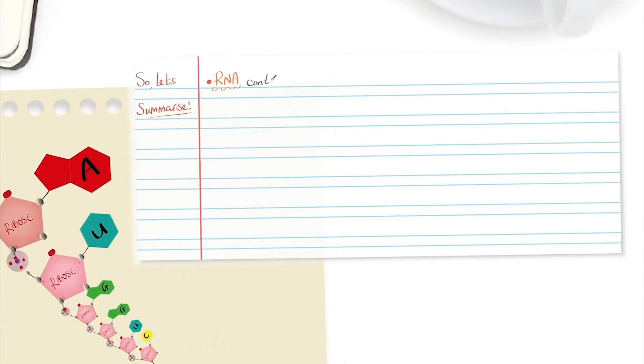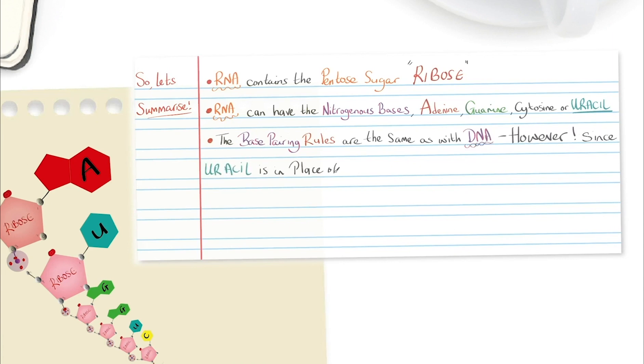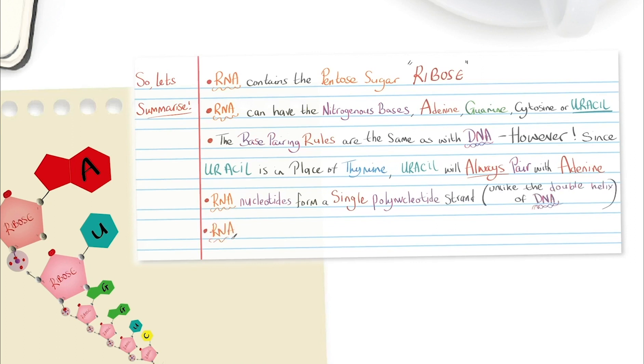Let's summarise. RNA contains the pentose sugar ribose. RNA can have the nitrogenous bases adenine, guanine, cytosine or uracil. The base pairing rules for RNA are the same as with DNA. However, since uracil is in place of thiamine, uracil will always pair with adenine. RNA nucleotides form a single polynucleotide strand, unlike the double helix of DNA. And RNA polynucleotide strands are typically much shorter than DNA polynucleotides.